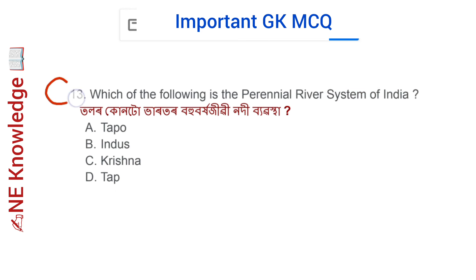Question number 13: Which of the following is the perennial river system of India? Perennial rivers are those which are full of water throughout the year because they receive their water from mountains, snowy regions, or glaciers. The perennial river systems in India include Ganga, Yamuna, Indus, Brahmaputra, Narmada, Mahanadi, and Tapti. The correct answer is Indus.